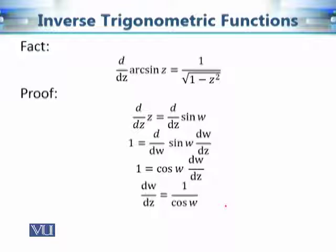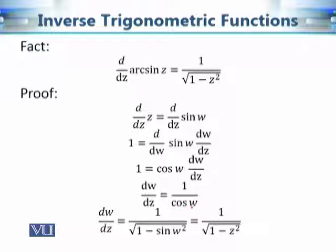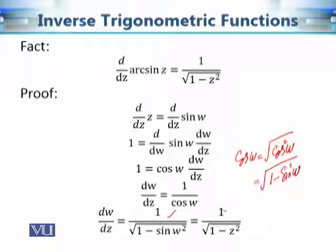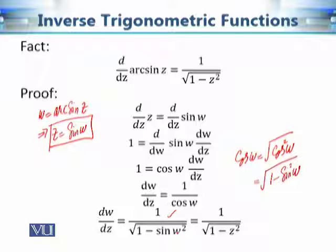Now, cosine w can be written as the square root of 1 minus sine squared w. Since sine w equals z, this becomes the square root of 1 minus z squared. Therefore dw/dz equals 1 over the square root of 1 minus z squared, which proves that the derivative of arc sine z equals 1 over the square root of 1 minus z squared.